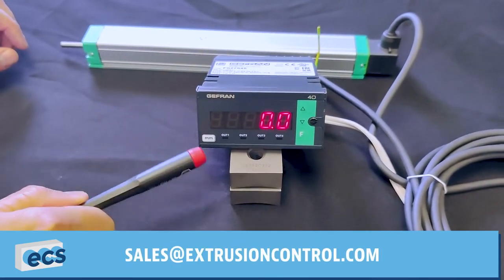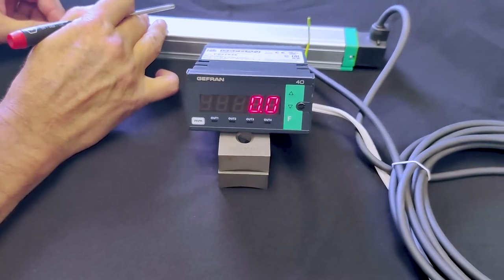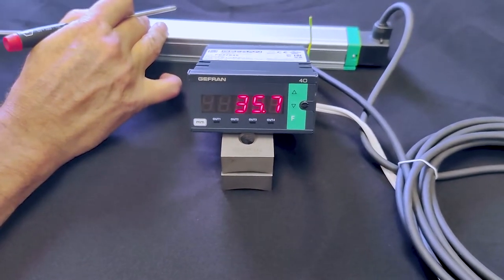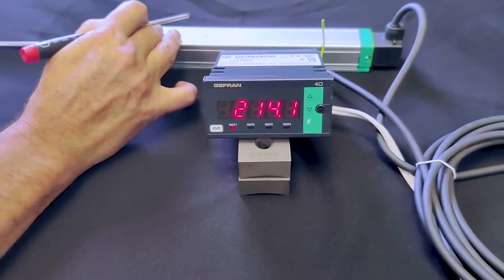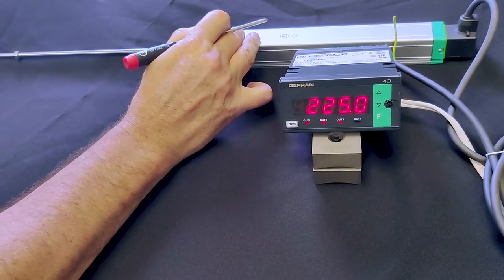As you can see right now we're set up in millimeters. We're at fully inserted so we're at zero. As we extend the linear pot we go out to the range of the linear pot, 225 millimeters.